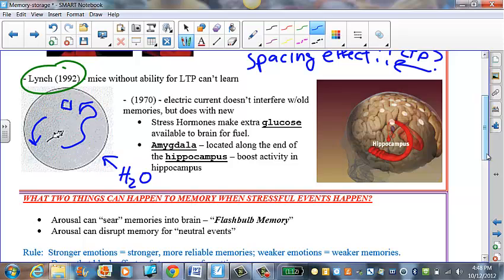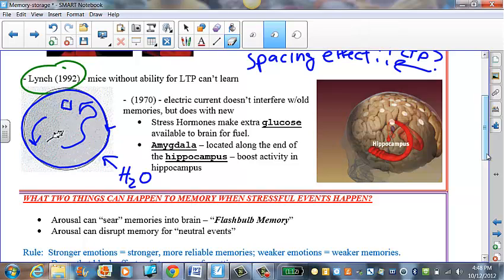So it doesn't take the rat long to locate that platform, and when placed in that pool again, the rat more quickly finds the platform, probably because of visual aids somewhere on here on the perimeter. So that rat, on subsequent times being placed in there,